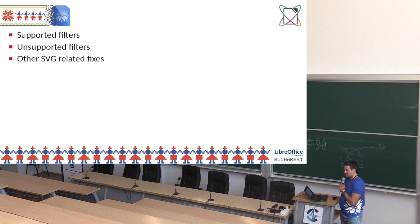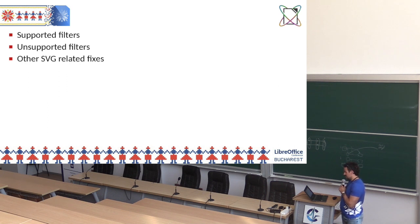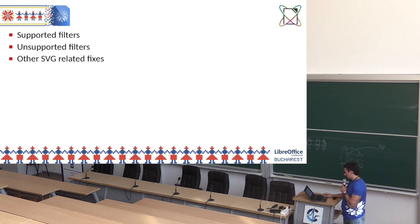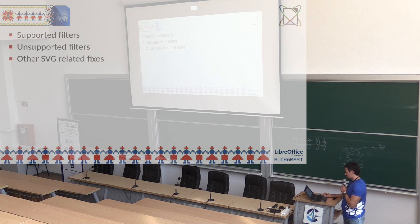While working on these filters, I also identified other SVG-related issues, and I tried to fix those as well. In the end, I fixed a bunch of SVG-related issues, which I'm going to talk about in this presentation. In the SVG standard, there are 16 filters. Some of them are already supported in LibreOffice 7.6 and some others are not. We're going to go through those filters first.